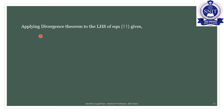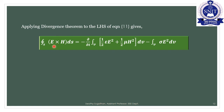Applying the Divergence theorem to the LHS converts the volume integral to a surface integral: ∯ (E cross H) · dS = −∂/∂t ∫∫∫ (½εE² + ½μH²) dV − ∫∫∫ σE² dV. This is equation number 12.